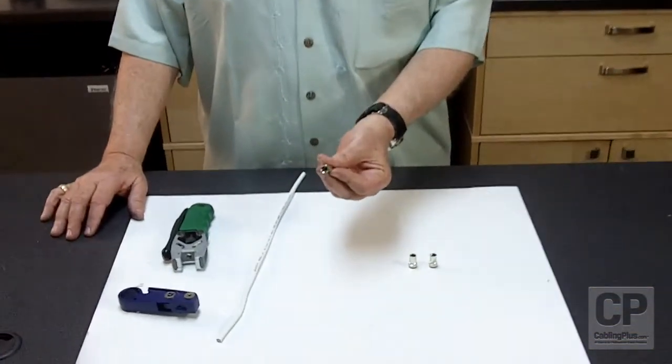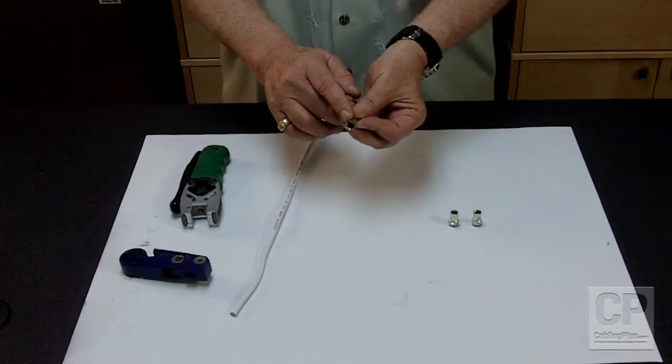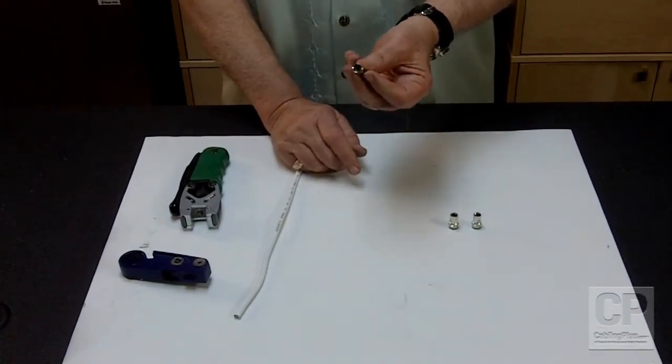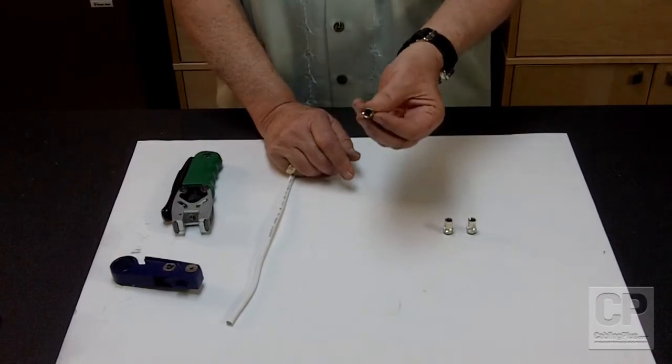This is what it looks like. The nice thing about it is it has a green ring that tells you it works with RG6, RG6 quad shield. If this were an F connector for RG59, it would have a red ring on it. This one has a green ring.